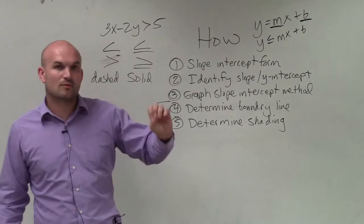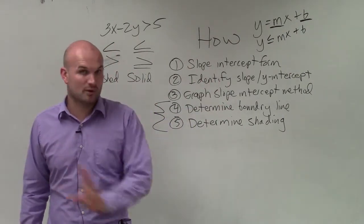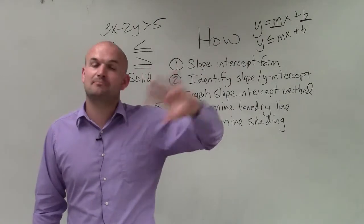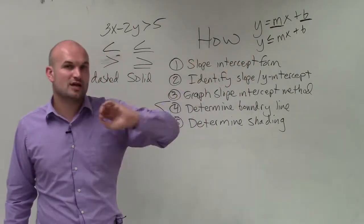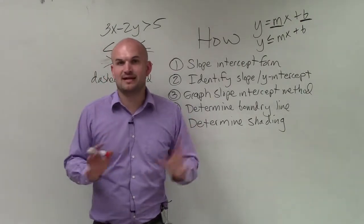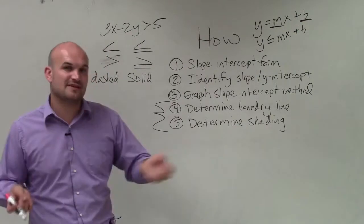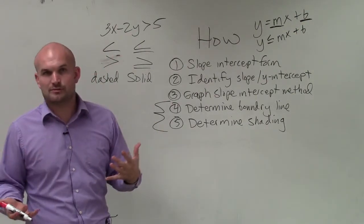If that test point was false, and it was below your line, that means all the other points below are false. And that means all the points above your line are going to be true. So you'd shade above the line. And that works vice versa, depending on where originally the test point you choose, if it's above or below your line. You just want to see if it's true or false. That way, you can determine your shading.